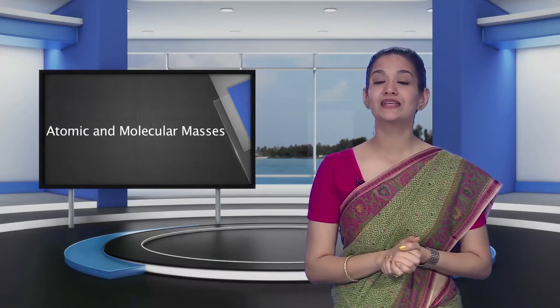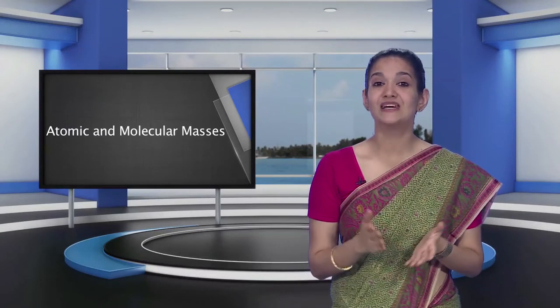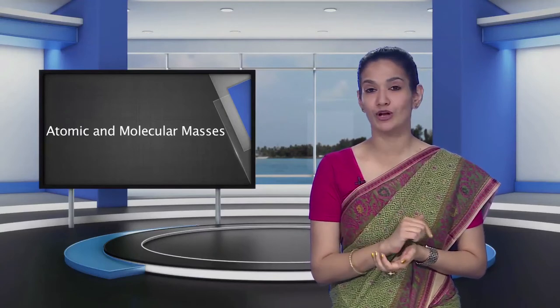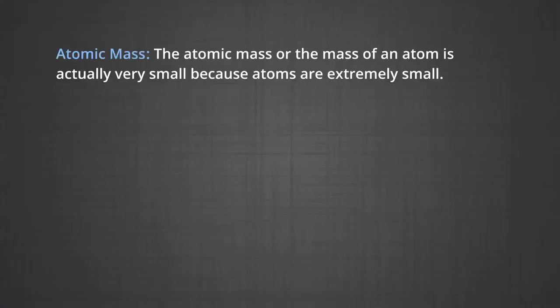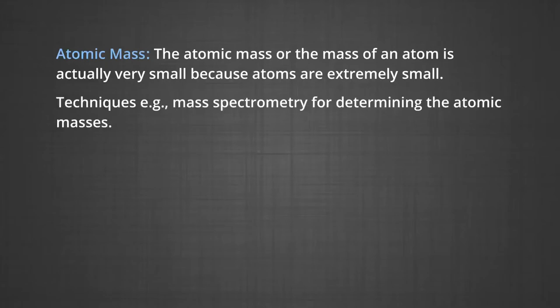Let's now learn about atomic and molecular masses. After having some idea about the terms atoms and molecules, it is appropriate here to understand what we mean by atomic and molecular masses. Let's study first about atomic mass. The atomic mass, or the mass of an atom, is actually very small, because atoms are extremely small. Today, we have sophisticated techniques, for example mass spectrometry, for determining the atomic masses fairly accurately.